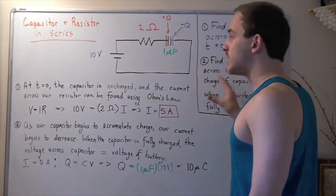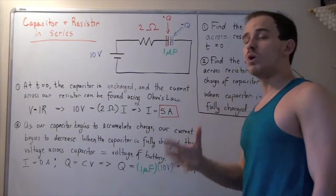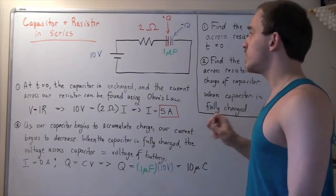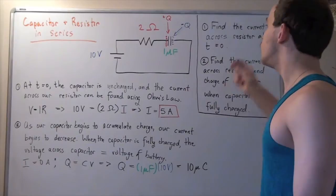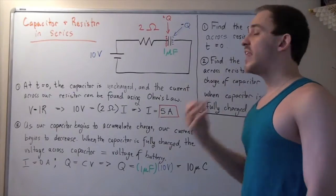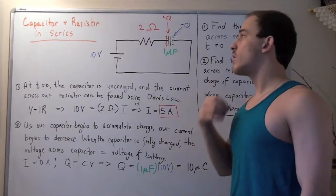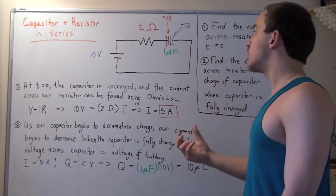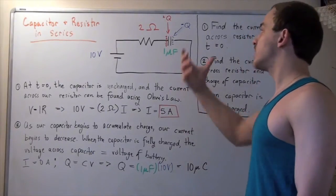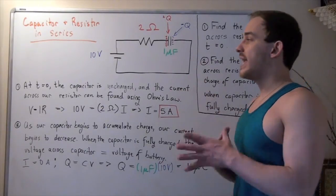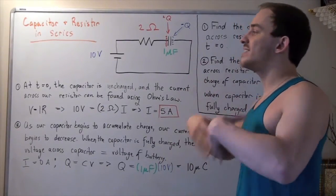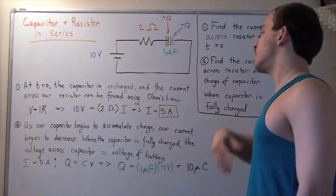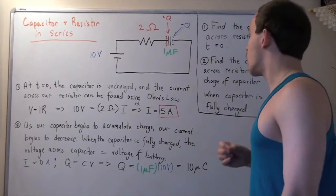Let's look at the two questions that we want to answer. First, we want to find the current across our resistor at time equals zero. Then we want to find our current across our resistor and the charge on our capacitor when our capacitor is fully charged — at some time greater than zero.